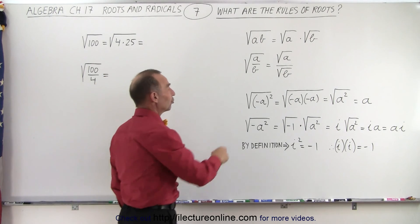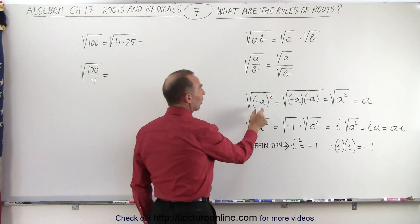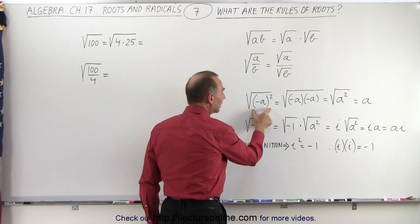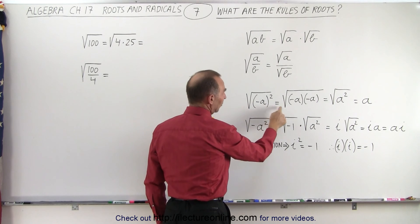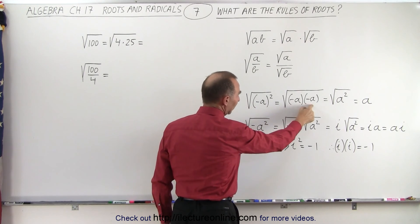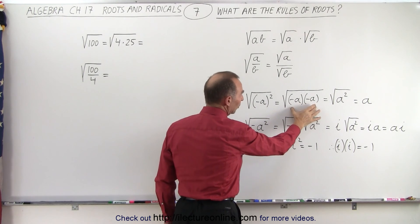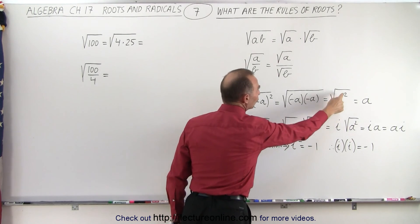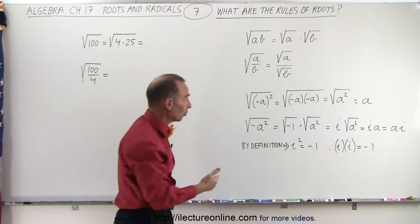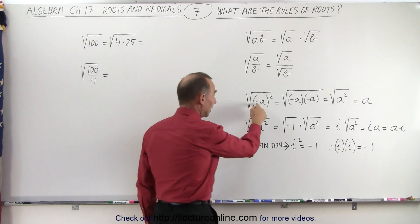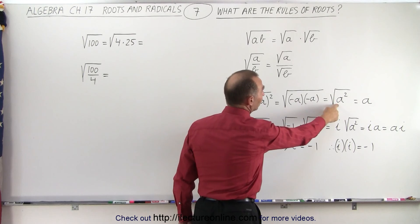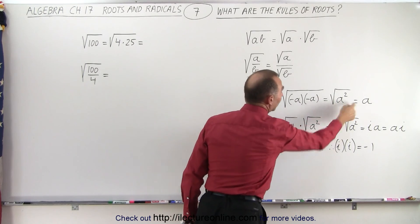If we have the square root of a negative number, but the quantity is squared, that can be written as negative the number times negative the number, which gives us A squared. That means the negative sign disappears because we're squaring the negative sign, and then we can simply take the square root and we get A.